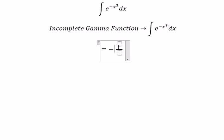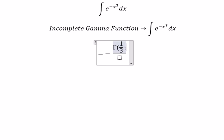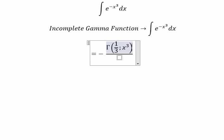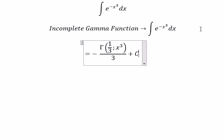We have s to the power of 3, gamma 1 over 3, and we have s to the power of 3 over 3. And c is the constant — that's it. Thank you for watching.